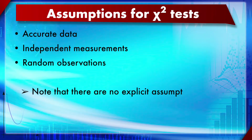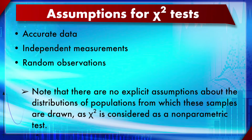Both these tests share a set of universal assumptions, which include accurate data, independent measurements, and random observations — the same assumptions as in most statistical significance testing. There are no explicit assumptions about the distributions of the populations from which the samples came, as the chi-square test is a non-parametric test. It does not make assumptions about the distribution and basically depends on rank.